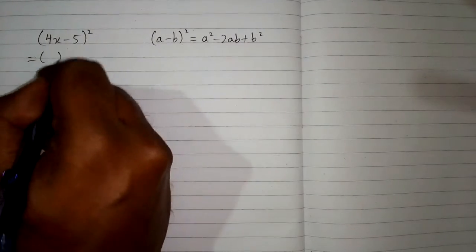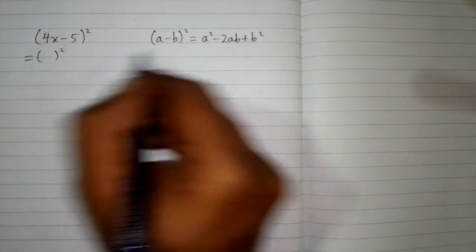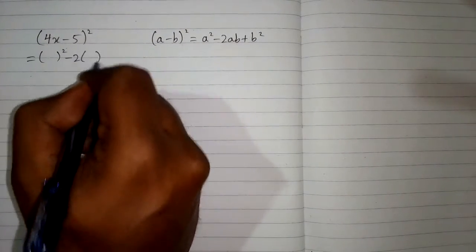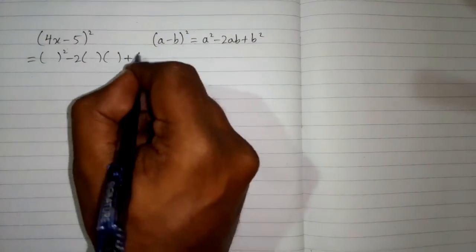So first we will draw the structure of this formula. So we put bracket in place of a, so we have a square minus 2 times ab plus b square.